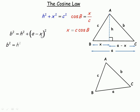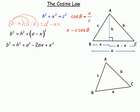If we expand (a minus x) squared, remember that means (a minus x) times another (a minus x). a times a is a squared; a times negative x is minus ax; negative x times a is another minus ax; and negative x times negative x is plus x squared. These like terms combine to give minus 2ax. So (a minus x) squared expands to a squared minus 2ax plus x squared.